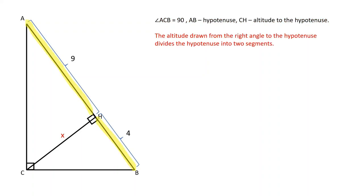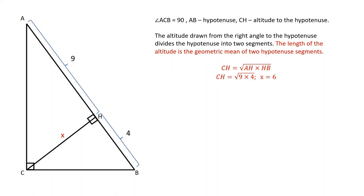The altitude drawn from the right angle to the hypotenuse divides the hypotenuse into two segments. The length of the altitude is the geometric mean of two hypotenuse segments.